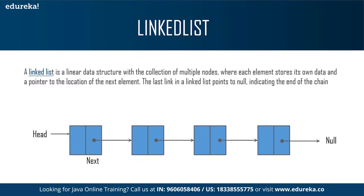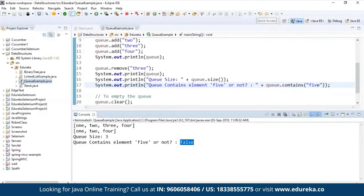To give an example: imagine a linked list like a chain of paper clips linked together. You can easily add another paper clip to the top or bottom. It's even quick to insert one in the middle — all you have to do is disconnect the chain at the middle, add the new paper clip, then reconnect the other half. A linked list works in a similar way. Let's take a small example and understand this in a better way.